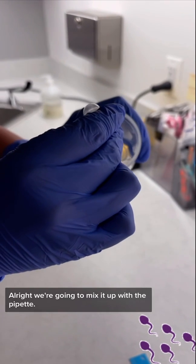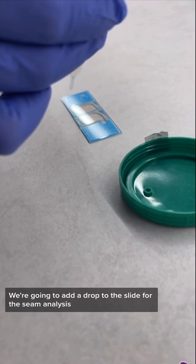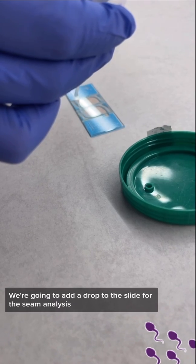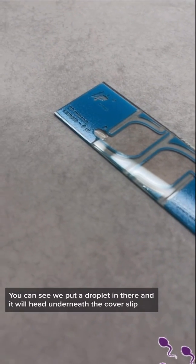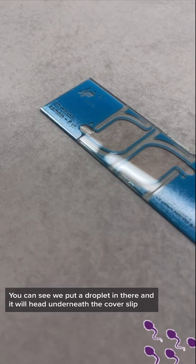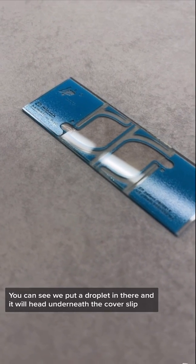We're going to mix it up with the pipette and add a drop to the slide for the semen analysis. These are special slides. You can see we put a droplet in there and it will head underneath the cover slip.